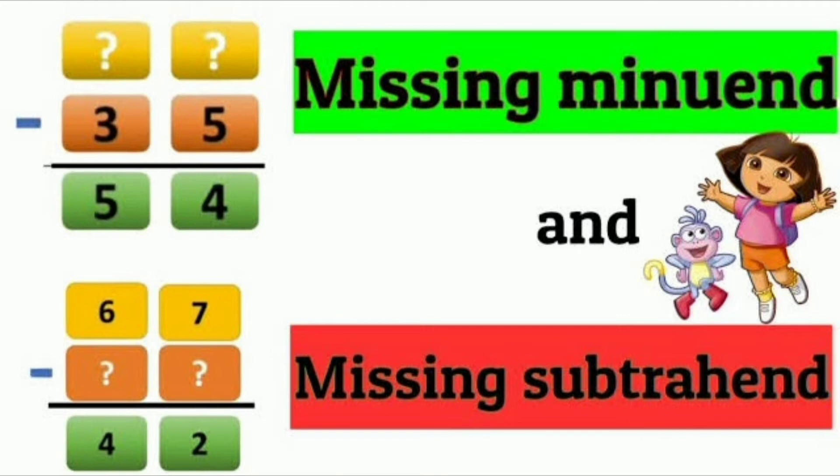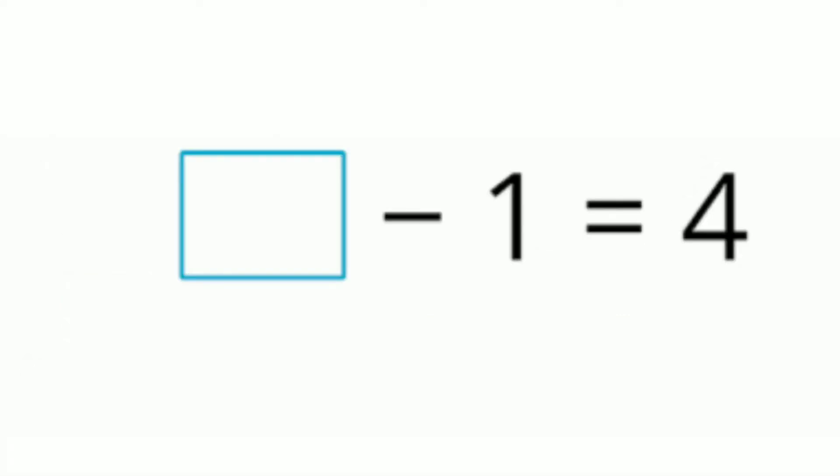In this task, the difference will be given and you have to find out the minuend or subtrahend. For example, if I take 50 as the difference: 100 minus dash equals 50 — what will come? Correct, 50 is the correct answer. Next, dash minus 70 equals 50 — what will come? Very good, 120.